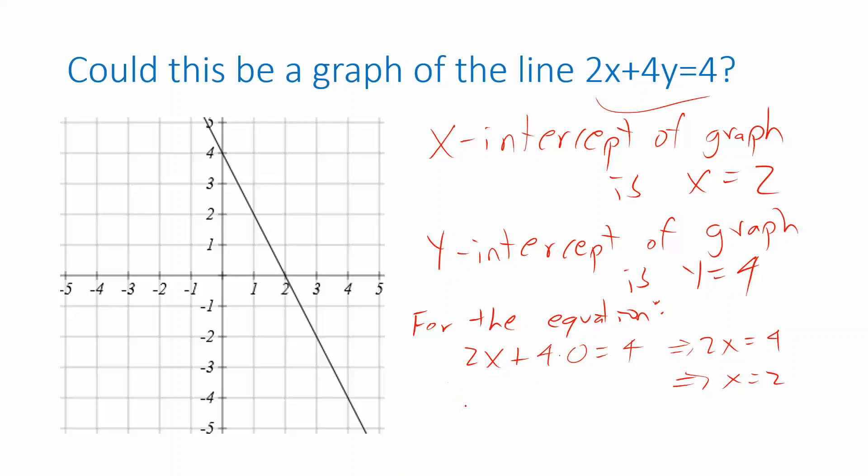How about the y-intercept? Now we're going to plug in a 0 for x to figure out the y-intercept. 2 times 0 is 0. So that plus 4y is just 4y. And then when you solve for y, you get y equals 1.